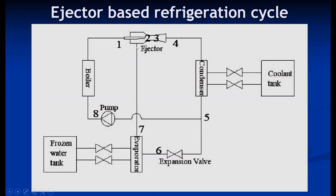Let us take a review of the basic cycle. The compressor is replaced by three devices: a pump, boiler, and ejector, performing the three basic functions of a compressor. The ejector sucks the refrigerant; the pump increases pressure; and the boiler increases temperature. The refrigerant at the outlet of the ejector is at high pressure and high temperature vapor. It enters the condenser where it gets condensed. At point five, it divides into two streams — one stream goes to the boiler and the other expands through the expansion valve before entering the evaporator, where it takes up heat from the substance to be cooled and gets evaporated.